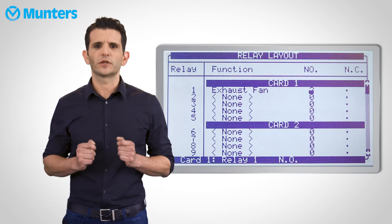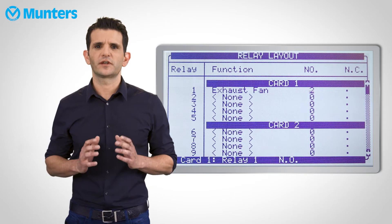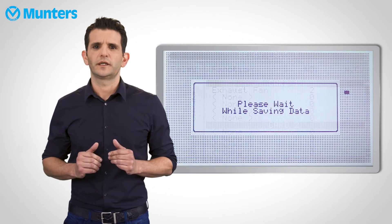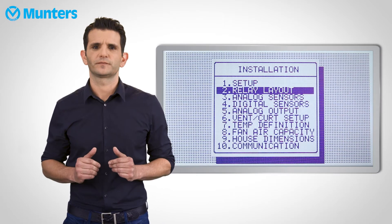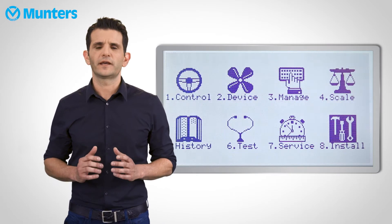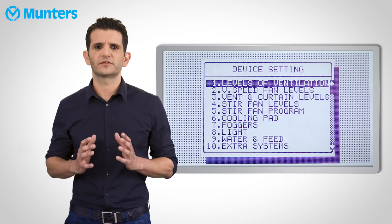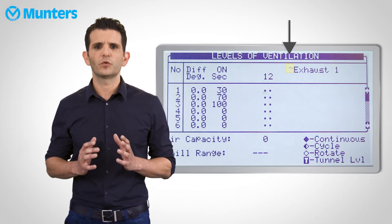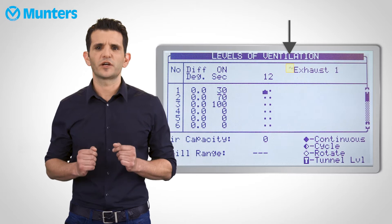You will see that you can only start with Exhaust Fan 2, because Exhaust Fan 1 is already defined. Now let's see how it looks in the Levels of Ventilation table. Navigate back to Device menu and select Levels of Ventilation. When you scroll to Exhaust Fan 1, you will see a small wavy sign.